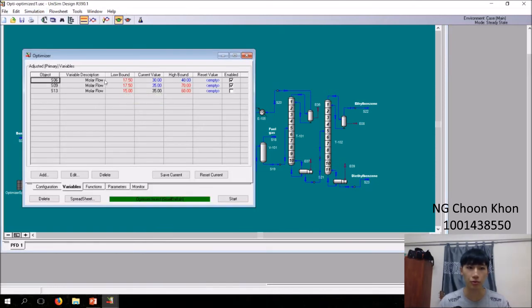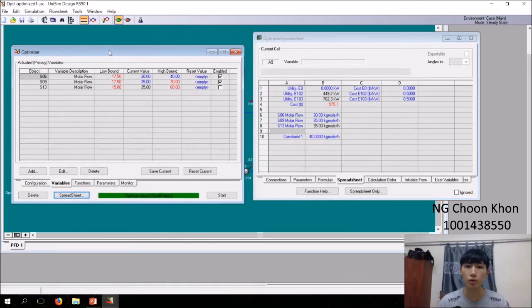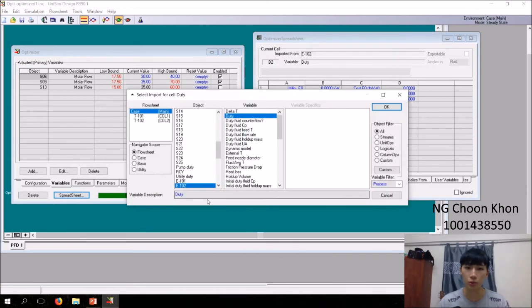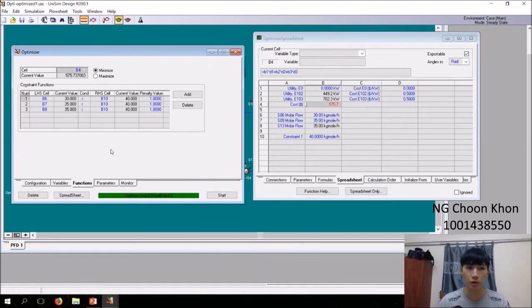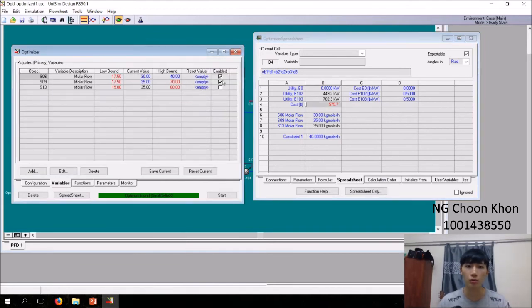We set our objective function and constraint. E102 and E103 are the coolers in use. It represents the duty multiplied by the price. We can start optimizing using Unisim. In the Unisim optimizer, first set out your variables. Next, set expression by inputting the variable from the cooler you want and multiply by the cost to get total cost. In the function, you want to minimize the cost and keep all flow rates less than your constraint. Now you can start to optimize.